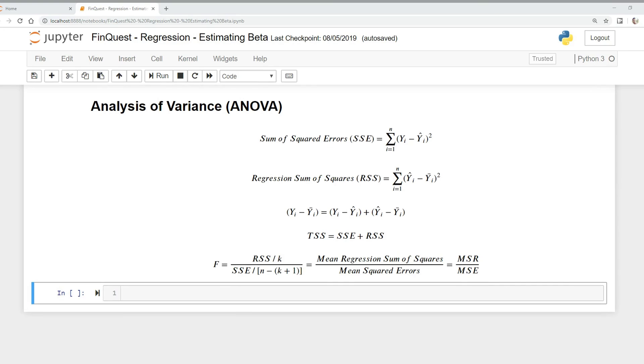We also have the regression sum of squares. That is similar, just that we're taking our predicted value, y hat, minus the average or the mean of all the dependent variables, actual dependent variables. We square that and we sum that.